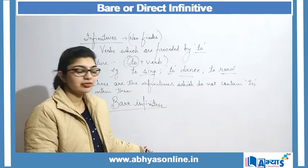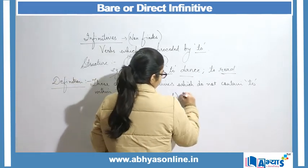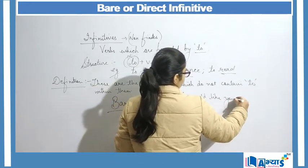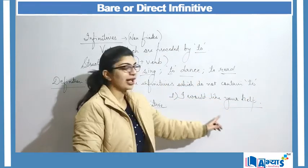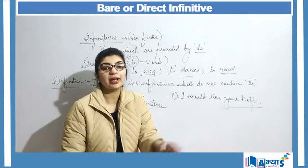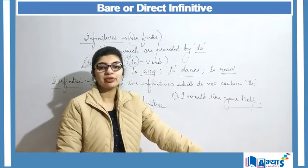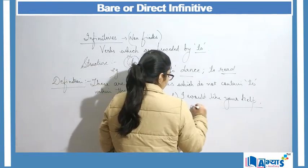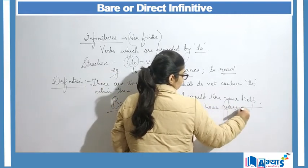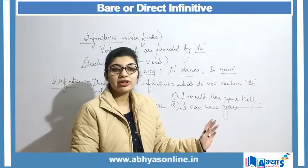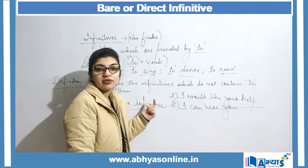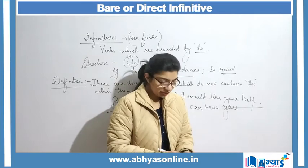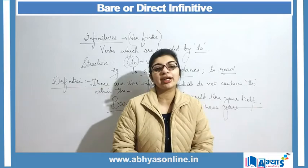For example, 'I would like your help' means 'I would like you to help me.' Here 'to plus help' is an infinitive, but 'your help' is a bare infinitive because the 'to' is hidden. Another example: 'I can hear you' means 'I can hear to you,' but 'to you' does not make sense, so the infinitive is hidden again. 'I can hear you' is an example of a bare or direct infinitive. Next, we will understand various applications of bare infinitive.